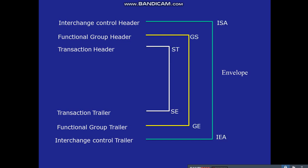The ANSI X12 envelope has three layers: interchange control header, functional group header, and transaction header. For the interchange control header, you will find an ISA segment and an IEA segment in the EDI file. For the functional group, GS is the functional group header and GE is the functional group trailer. For the transaction, ST is the transaction header and SE is the transaction trailer.